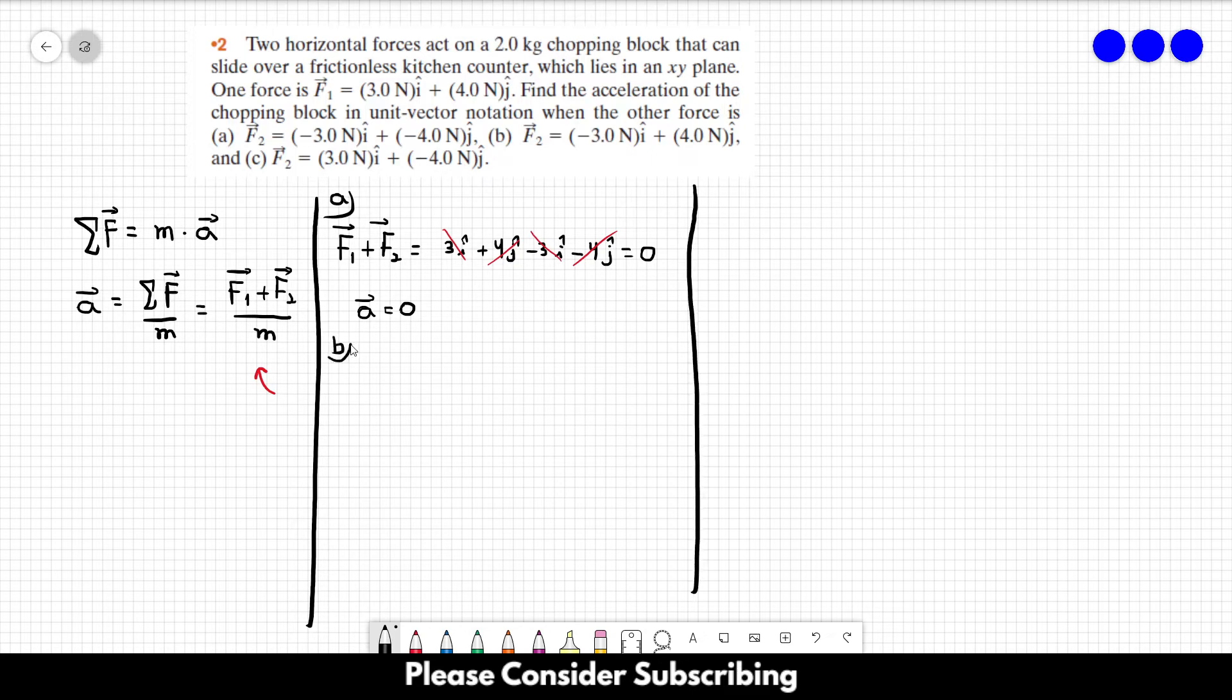And in B, let's do the same process over here. F1 plus F2, which is equal to three in the i direction plus four in the j direction minus three in the i direction plus four in the j direction. This is the force that I'm writing over here. The three cross out with this three over here. And then we have eight newtons in the j direction.